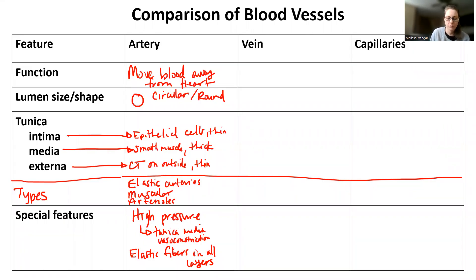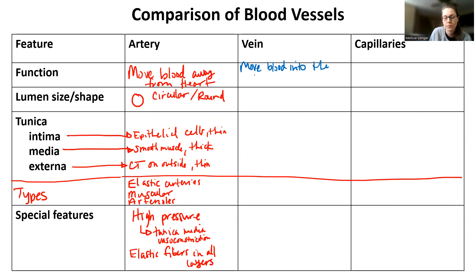Let's move on to comparing arteries to veins. Veins move blood into the heart. They often carry carbon dioxide and waste, but not all the time.